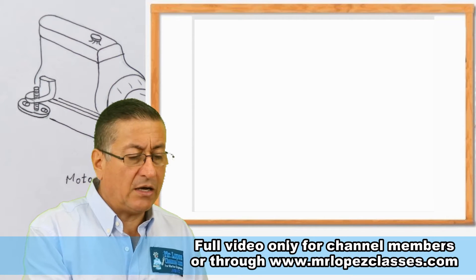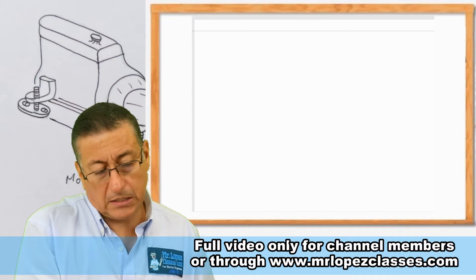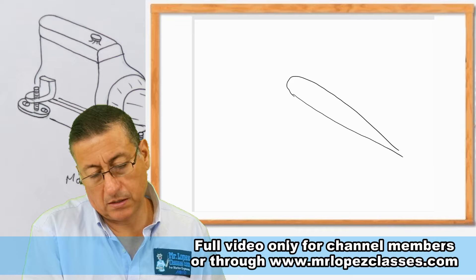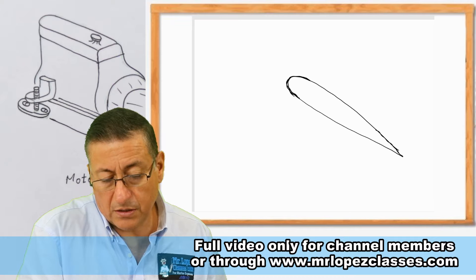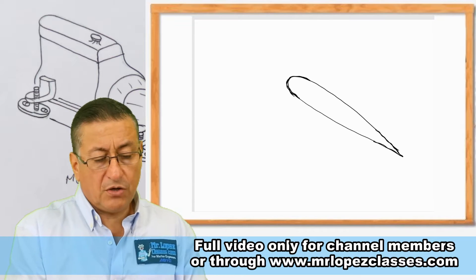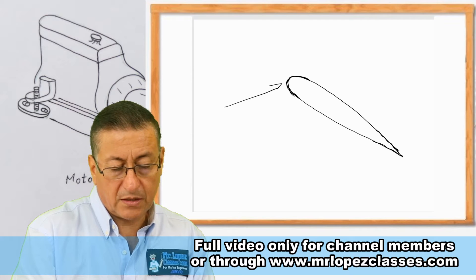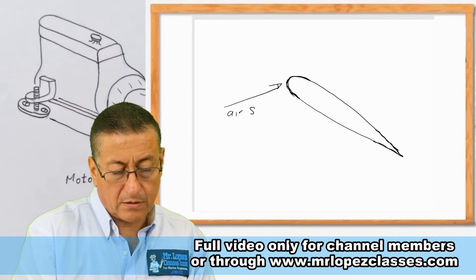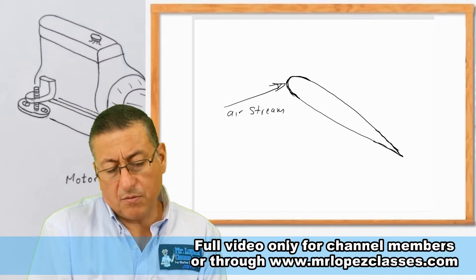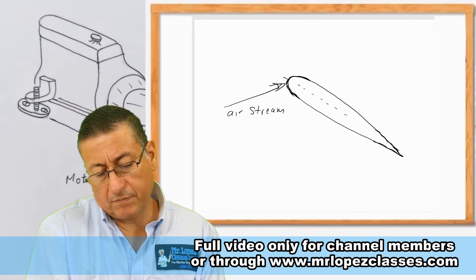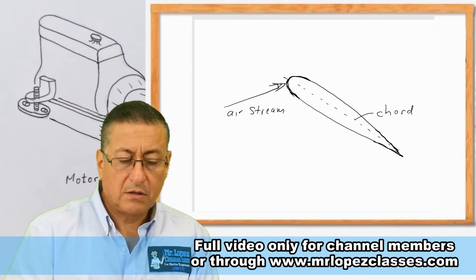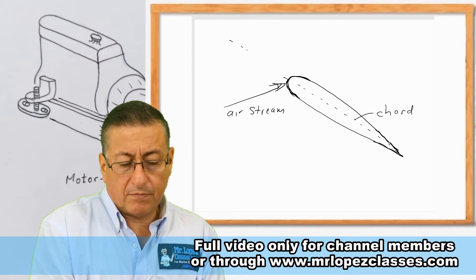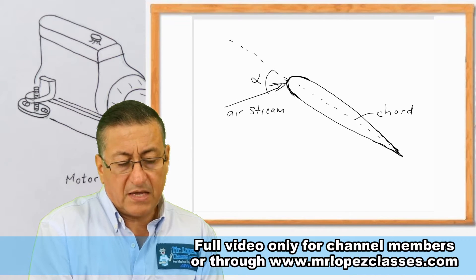Now I am going to make a cross-section of the wing. This is the leading edge and this is the trailing edge. We are going to suppose that this is the earth, and we are going to pass an imaginary line through the center of the wing. This angle is the attack angle.